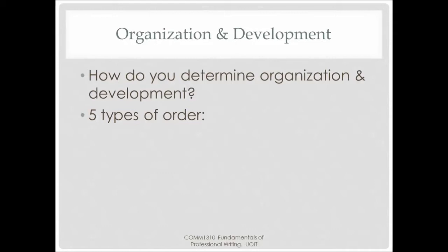Then you will need to decide on a way to organize your description. There are five types of orders you might use. First, with spatial ordering, you organize your description based on the space around you — for example, what you see when you walk through the door of a particular room, describing each thing as you move through the space. Second, with chronological order, you describe events in the order that they happen, which is the one you're probably most familiar with.